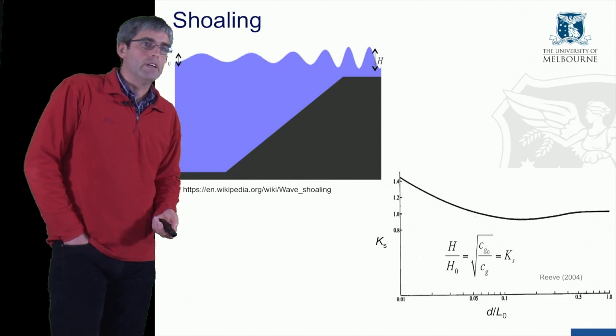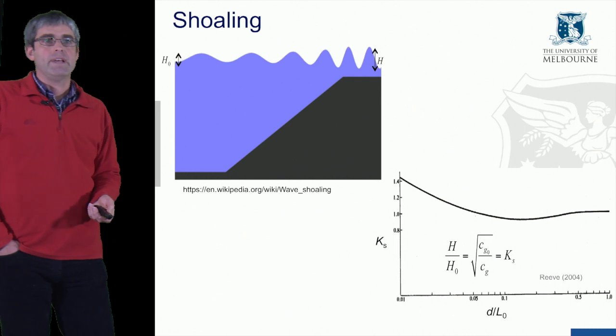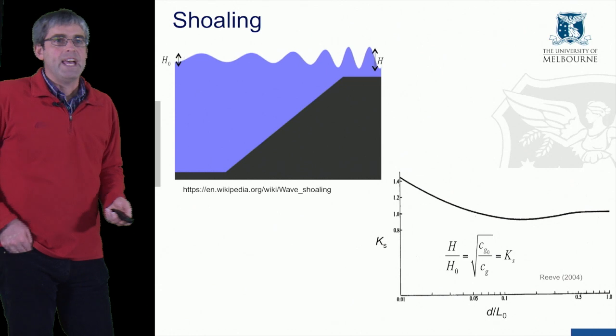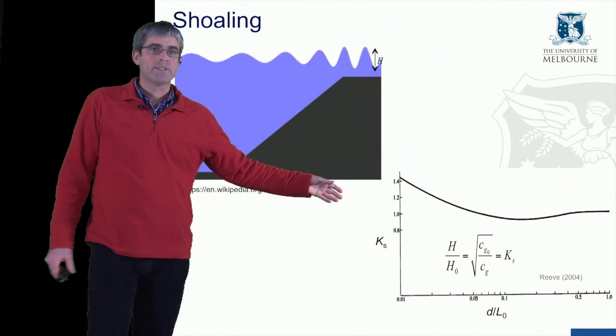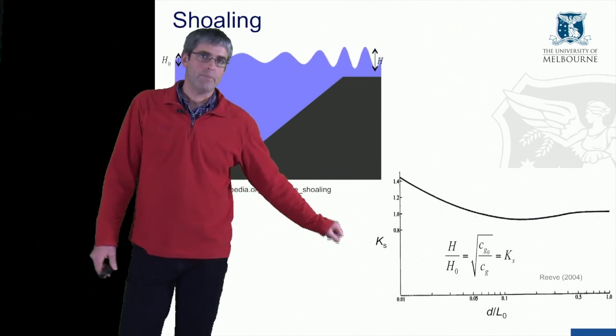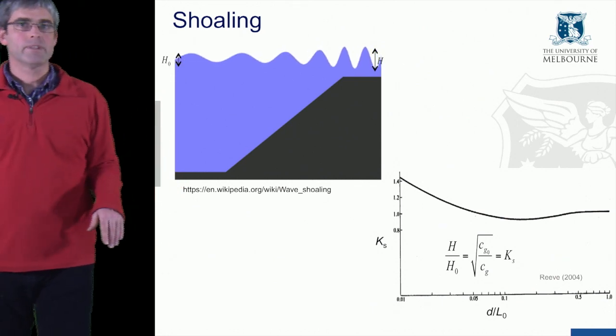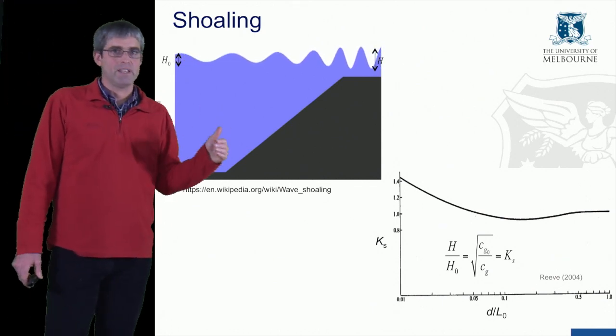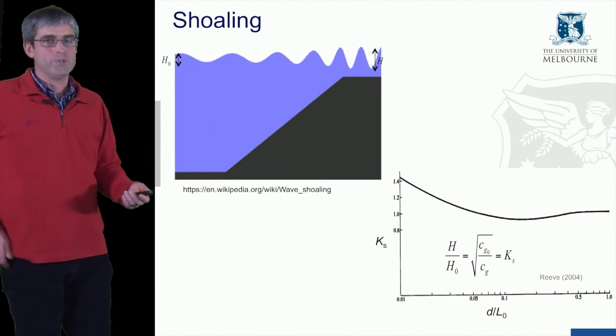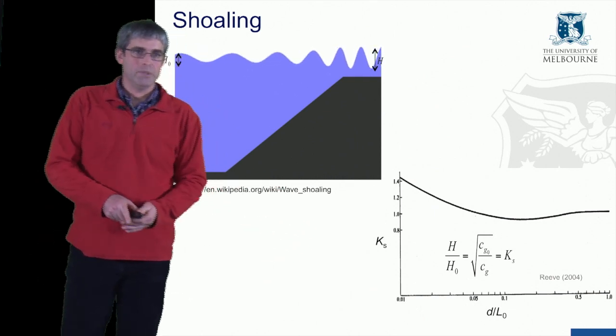There's a relationship for predicting the change in wave height as a function of the change in wave speed. This factor Ks can be predicted from the water depth divided by the deep water wavelength. We can calculate the deep water wavelength using the shallow wave equations and the small amplitude wave equations, and so we can then estimate Ks using this graph here.